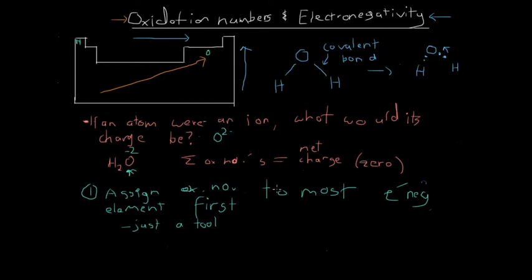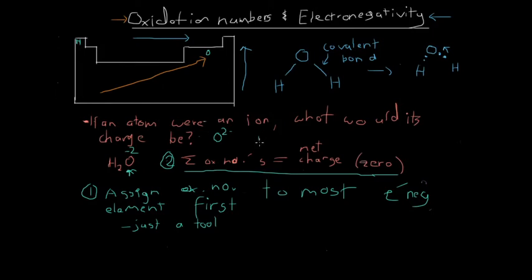We've assigned the oxidation number to the most electronegative element first - that being oxygen - with a value of minus two. This is basically condition number two: the sum of the oxidation numbers has to equal the net charge. We've got two hydrogens here. We know that hydrogens are in group one and like to form protons, H⁺. So if we give each of these hydrogens an oxidation number of plus one, and we have two of them, the sum is plus one plus one minus two equals zero. That satisfies the rule.